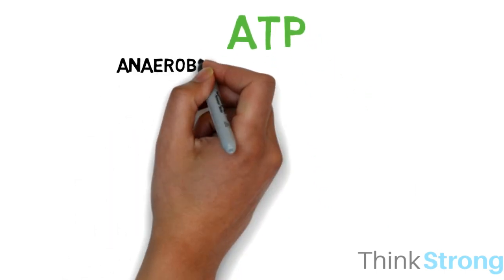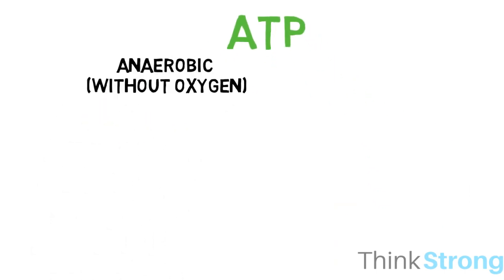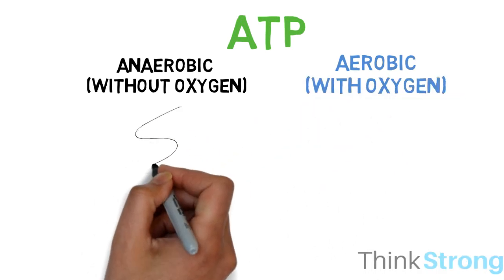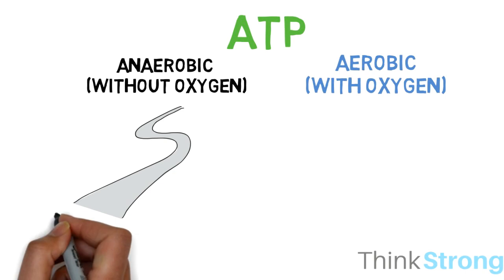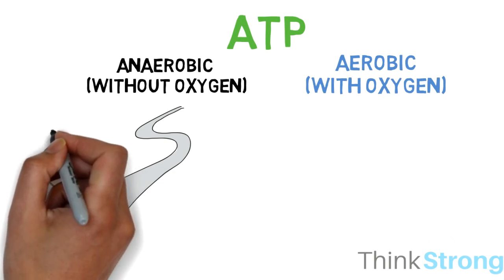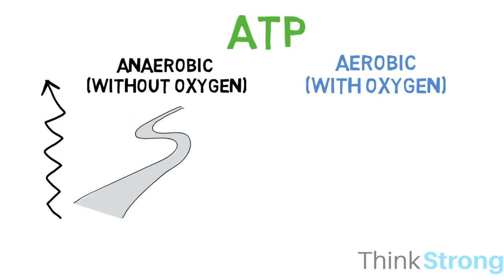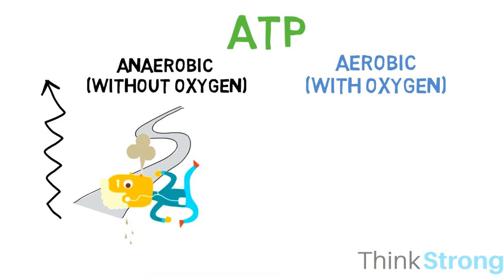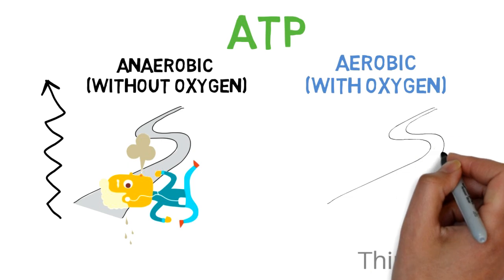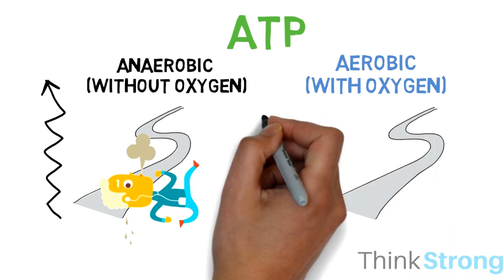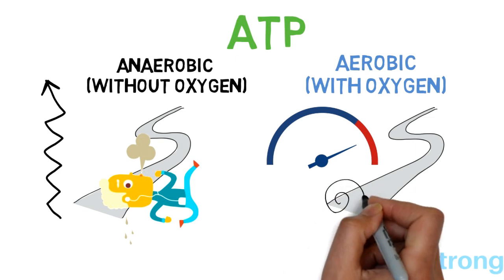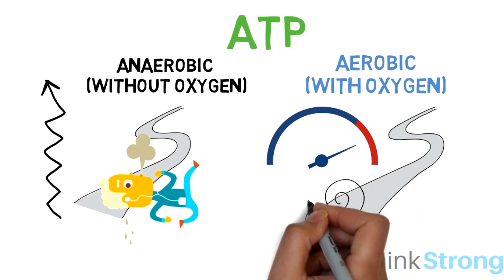Let's compare the two different ways that ATP can be created. The anaerobic pathways are capable of regenerating ATP at high rates, yet they are limited by the amount of energy that can be released in a single bout of intense exercise. In contrast, the aerobic system has an enormous capacity, but is sometimes hampered in its ability to deliver energy quickly.